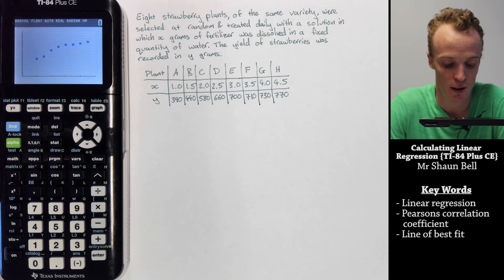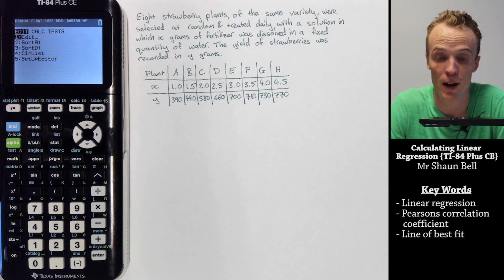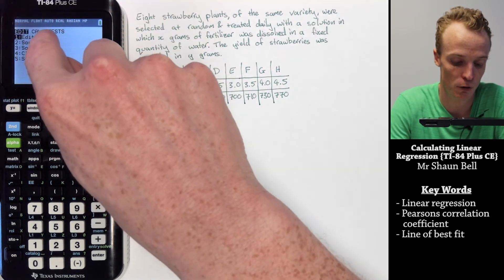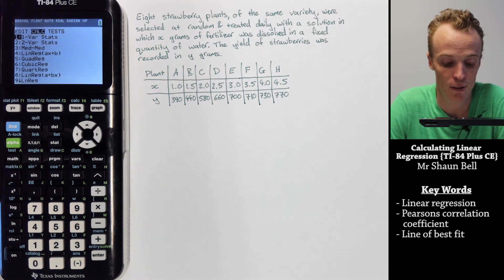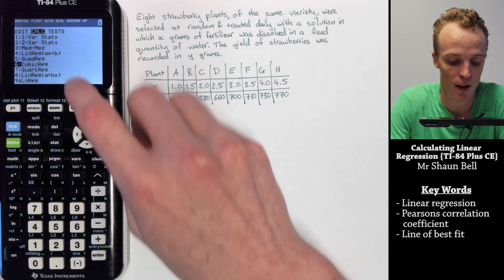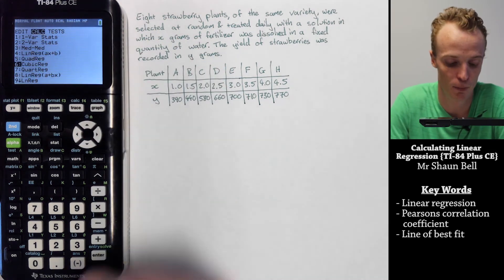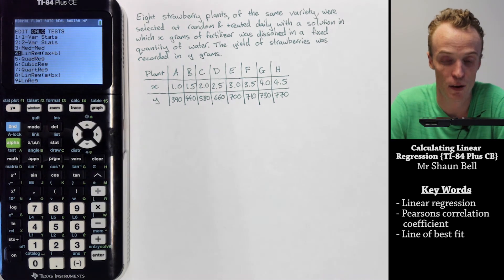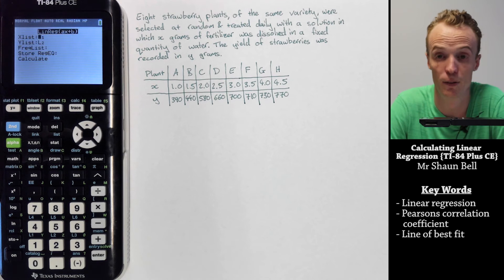To find that, you hit the stat button to begin with. And instead of editing the list that we had before, you're actually going to move across to the calculator section using your right arrow key. As you can see, we can calculate a range of different things. In this case, we want the linear regression model in the format of ax plus b. So you can either highlight the number 4 or press the number 4.